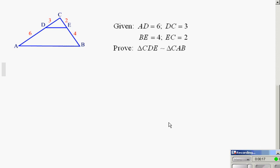We're going to do a little bit of combining of algebra with our traditional proofs. So given that AD is 6, DC is 3, BE is 4, and EC is 2, prove the triangles are similar.